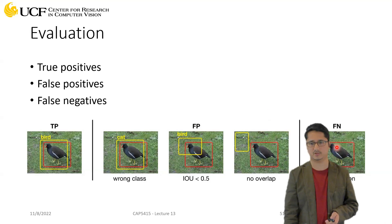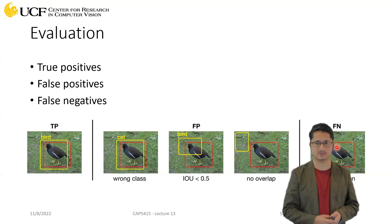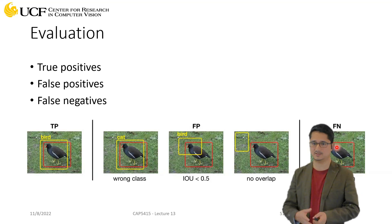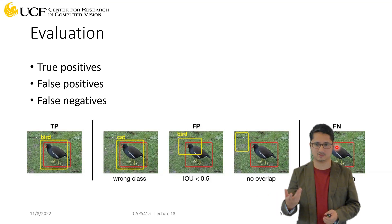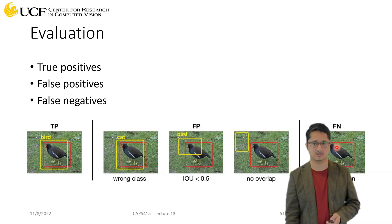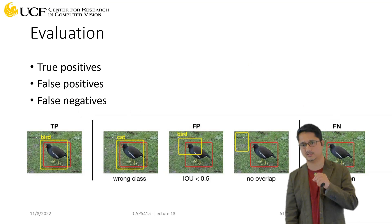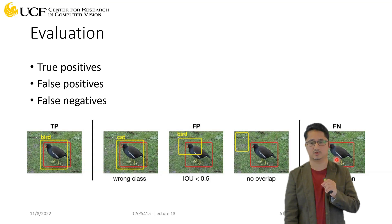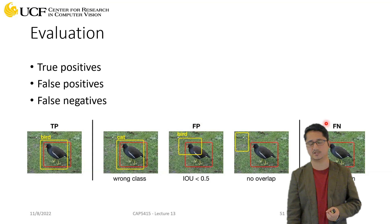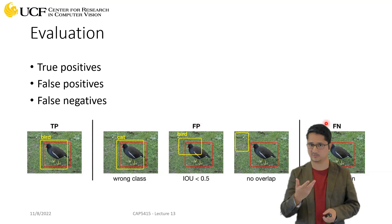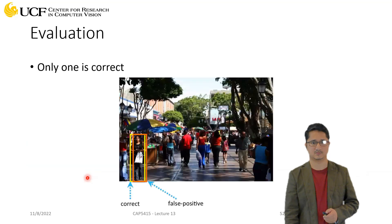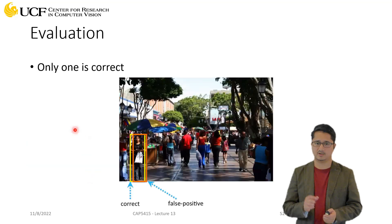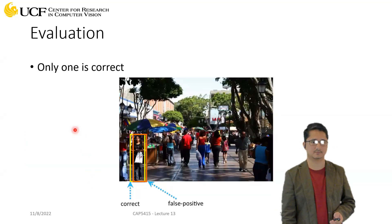The other category is false negatives. The idea is you had some object in your image but your network was not able to detect it and predicts no bounding box at all. That's a false negative — your network is saying nothing is present, but in fact a bird was actually present. You can relate these terms to precision and recall, which we discussed earlier.